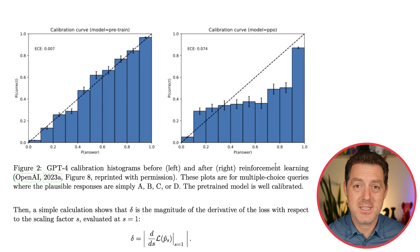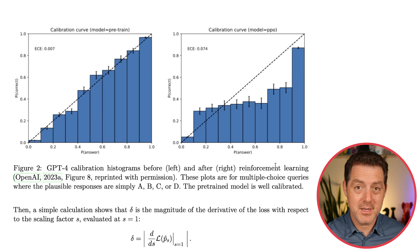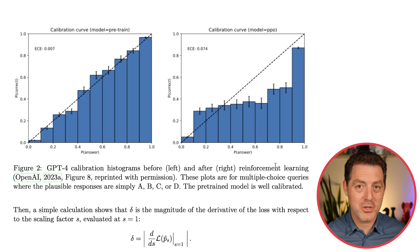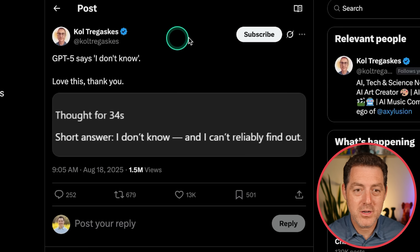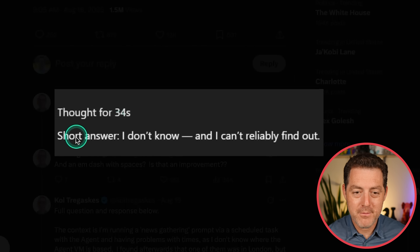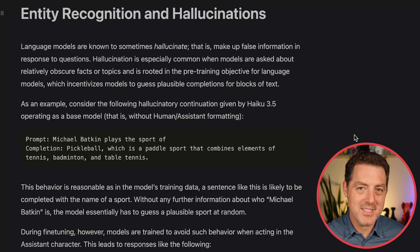We also need to fix the evaluations of models. If you are a benchmark creator, you should be adding confidence thresholds and rewarding abstaining from answering when the model doesn't know. For example: give a plus one for a right answer, zero for 'I don't know,' and a negative score for the wrong answer. It turns out GPT-5 is already starting to do this. One user shared that GPT-5 said after 34 seconds of thought: 'Short answer: I don't know, and I can't reliably find out.' Wouldn't you rather see that than a hallucination? Even Elon Musk said that's an impressive response — and it is the right response.